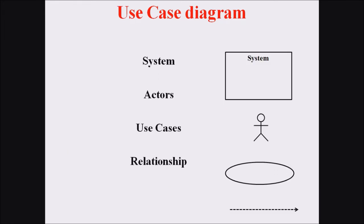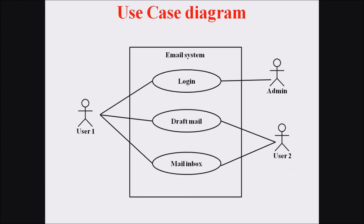The different use case diagram symbols are: system, which is represented with a rectangle with the system name; actors, represented with an actor symbol; use cases, represented with an ellipse or circle; and relationships, represented with arrow lines.